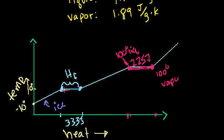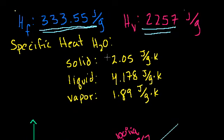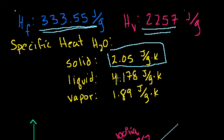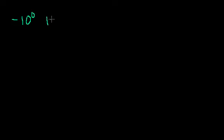What about the sloped parts of the diagram — how much energy is required to warm up a gram of ice by 1 degree Celsius? For that we use specific heat. It takes about 2 joules per gram per Kelvin to warm water in the solid state. In the liquid state it takes about double that — roughly 4 joules per gram per Kelvin. In the vapor state it's actually more similar to the solid state.